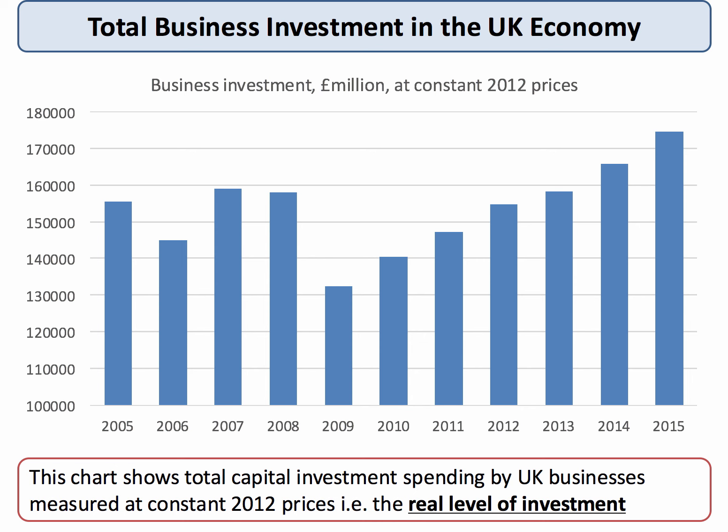This chart shows total business investment in the UK economy. It's measured in millions of pounds and also at constant 2012 prices — in other words, it shows us the real level of investment. You can see that investment follows a cyclical pattern. It's quite strong from 2005 to 2007 and 2008, but then it fell sharply in 2009. It took a little while to recover; in fact in 2012, business investment was still a little bit below the level in 2008. So investment tends to be quite highly cyclical.